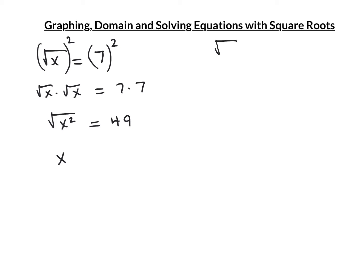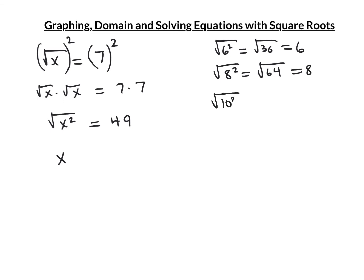Notice: the square root of 6 squared is 6; the square root of 8 squared is the square root of 64, which is 8; the square root of 10 squared is the square root of 100, which is 10. A square and a square root are inverses of each other — they cancel each other out. That means the square root of x squared is x.